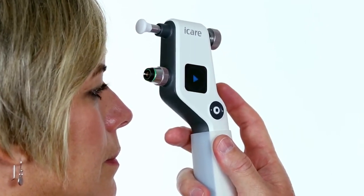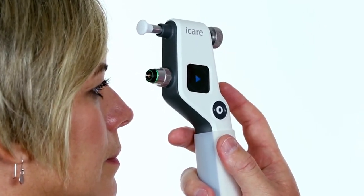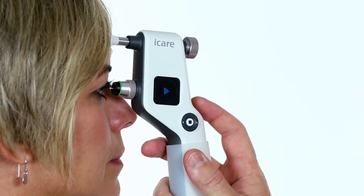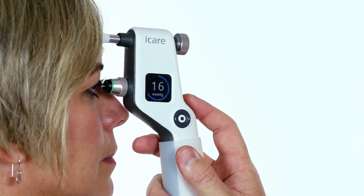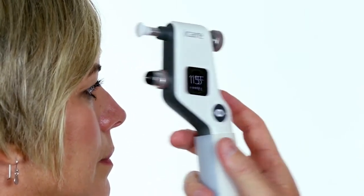Press the measure button once to clear the reading and repeat the same steps for the fellow eye. To perform individual measurements, press the measure button lightly six separate times or until you hear a long beep.